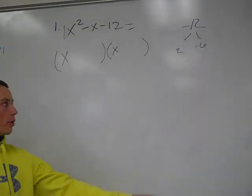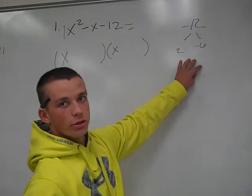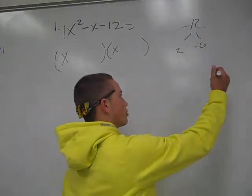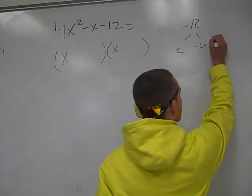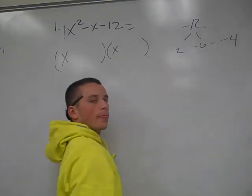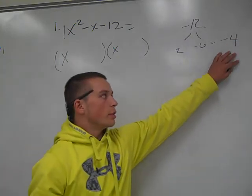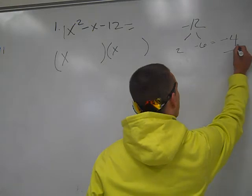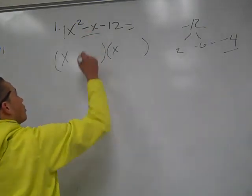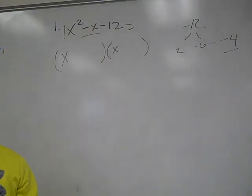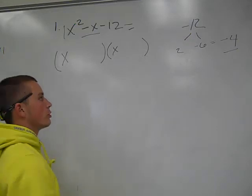Now what you do is you add 2 and negative 6. Negative 6 plus 2 equals negative 4. This becomes your b. Does negative 4 equal negative 1? No. So this can't be it.